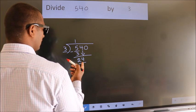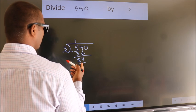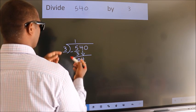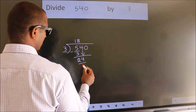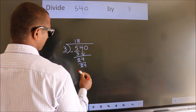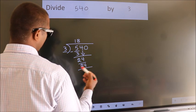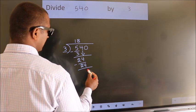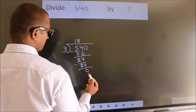When do we get 24 in the 3 table? 3 eights 24. Now we subtract, we get 0.